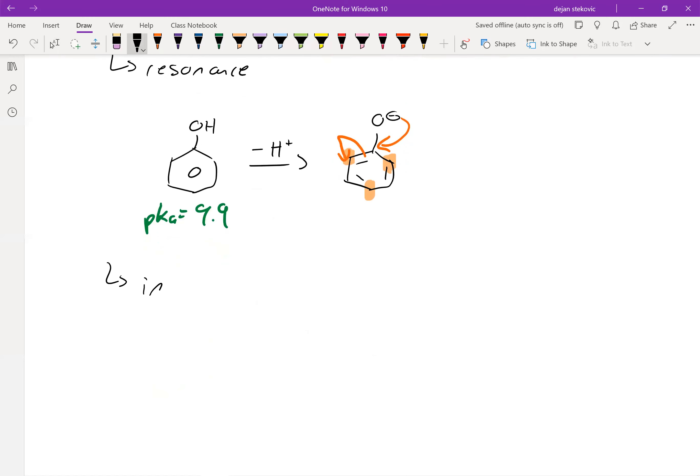Another thing that can make them more acidic is induction. Again, this helps stabilize the conjugate base. So induction is when we have some very electronegative atoms near our area of interest. So for example, if we have three fluorines attached here, and then we have this OH here.